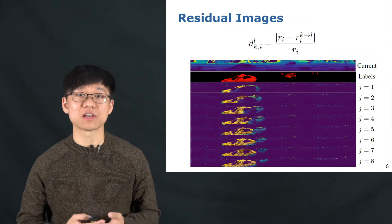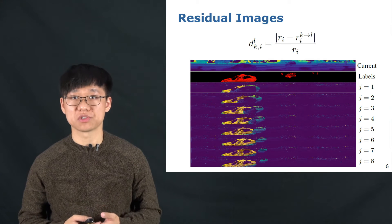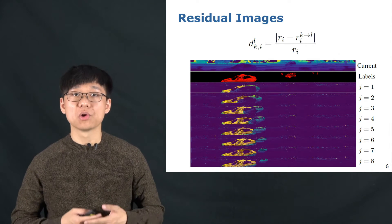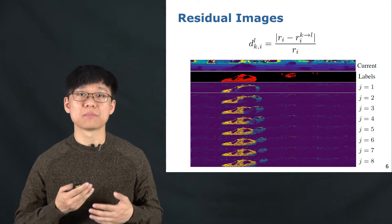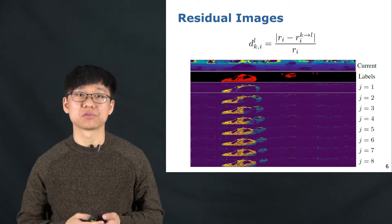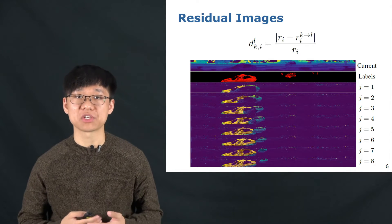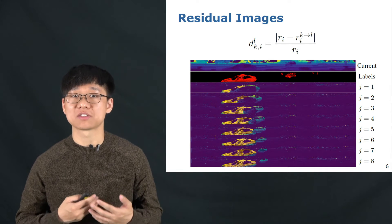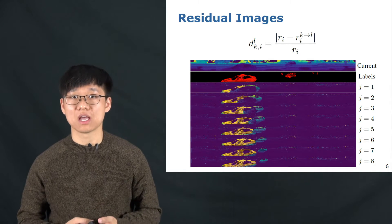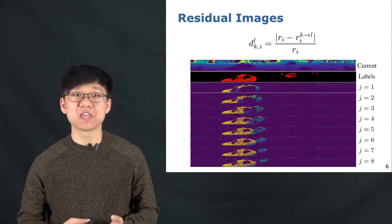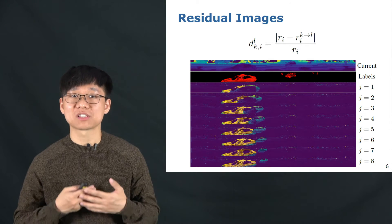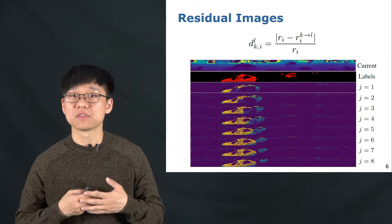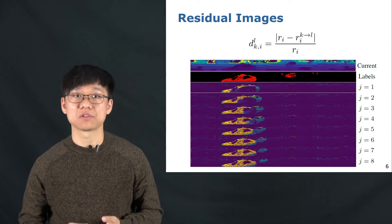Here is an example of generating the residual images. To generate residual images, we first transfer the past scans to the current viewpoint with a transformation matrix estimated from a SLAM or sensor-based odometry. As shown in the equation, we then project them into the range representation and subtract them from the current range image.